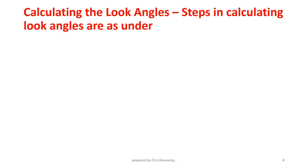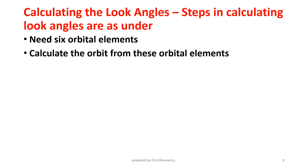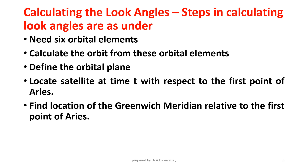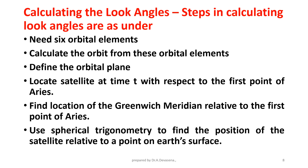Calculating the look angles: the steps in calculating the look angles are as follows. First, one needs the six orbital elements. Second, calculate the orbit from these orbital elements. Third, define the orbital plane. Fourth, locate the satellite at time t with respect to the first point of Aries. Fifth, find the location of the Greenwich meridian relative to the first point of Aries. Sixth, use spherical trigonometry to find the position of the satellite relative to a point on the earth's surface.